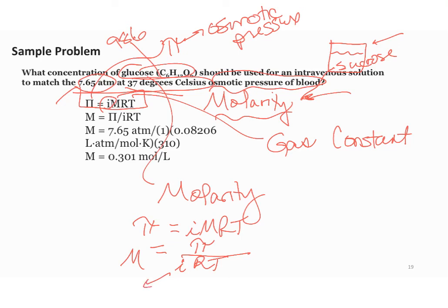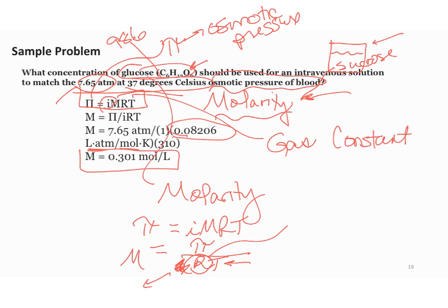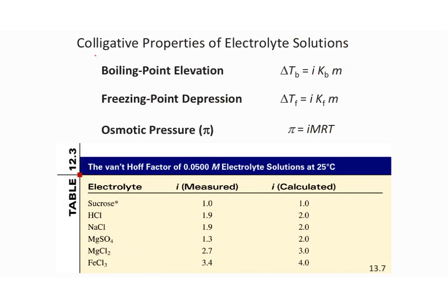The Van't Hoff factor i is 1 for all covalently bonded compounds — glucose is covalent, so i equals 1. Make sure T is in Kelvin, and make sure all units match the R value. Since we're talking about osmotic pressure, use R = 0.08206 L·atm·mol⁻¹·K⁻¹, and match your units accordingly. In this case, the molarity of glucose needed is 0.301 molal. Here are all three colligative property formulas as a summary.